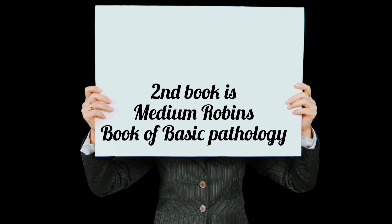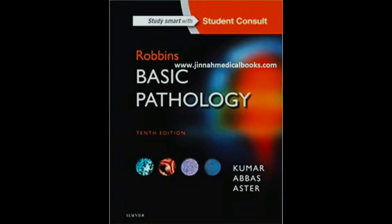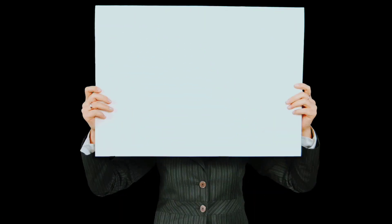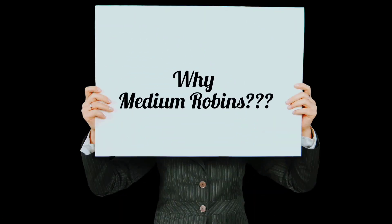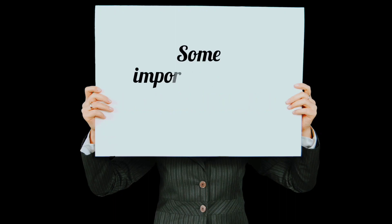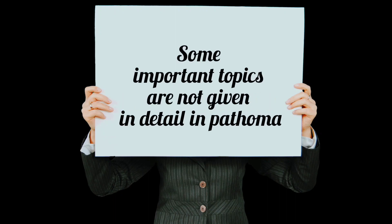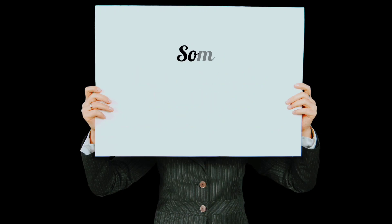The second important book is Robin's Basic Pathology — medium Robins. Not the big Robins; you have to prepare with the medium Robins. When you are doing pathology, there are some topics in medium Robins that are very important but contain a very small amount of information. I will tell you in the coming videos which important topics you need to do from Robins.